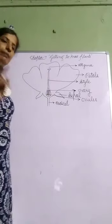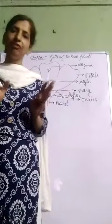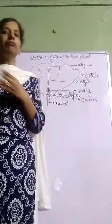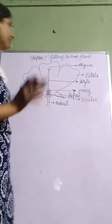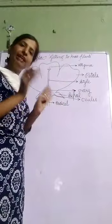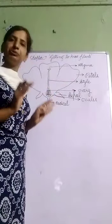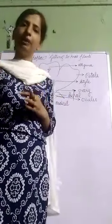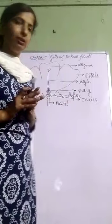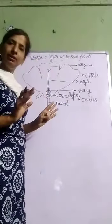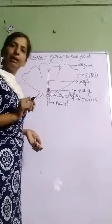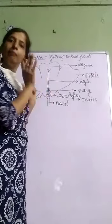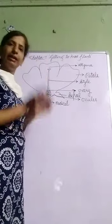A flower has two parts: male part and female part. In some flowers, both parts are present together, and in some flowers only one part is present. A flower having both male and female parts is called a bisexual flower. And if a flower has either only a male part or only a female part, we call it unisexual. So there are two types of flowers — bisexual and unisexual. I am drawing here a bisexual flower, showing both parts in one flower.